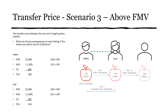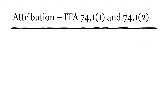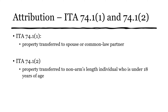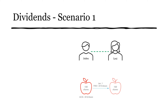When talking about shares, we also need to consider dividends — this is a good time to discuss attribution. From your lecture notes and readings, you were to look at subsection 74.1(1) and 74.1(2). Subsection 74.1(1) deals with property transferred to a spouse or common-law partner. Subsection 74.1(2) deals with property transferred to a non-arms length individual who is under 18 years of age. Notably, 74.1(2) also includes nieces and nephews, even though they are not considered related in other parts of the Income Tax Act.